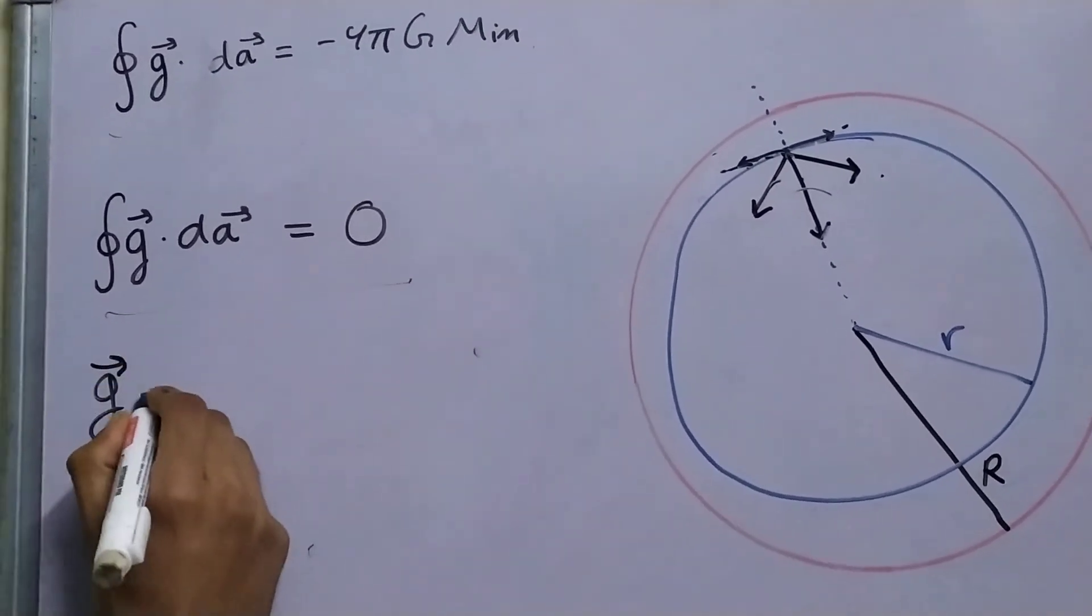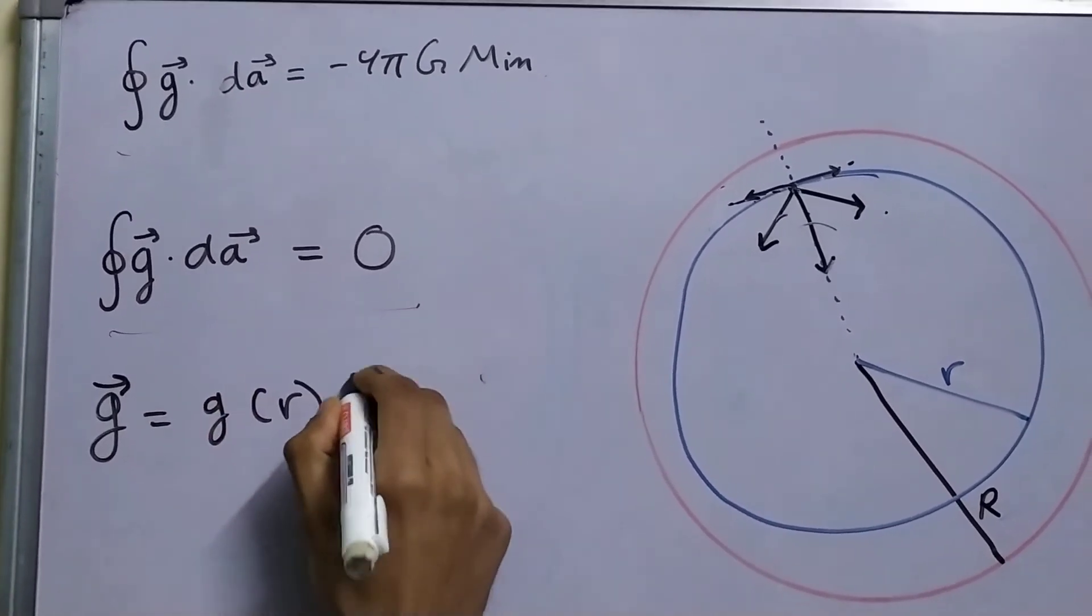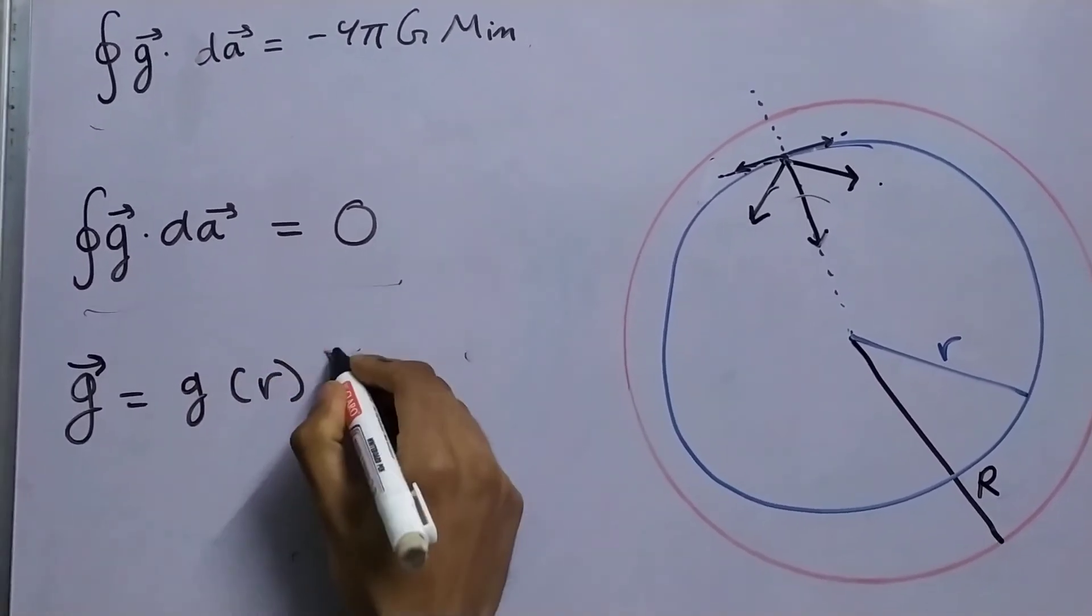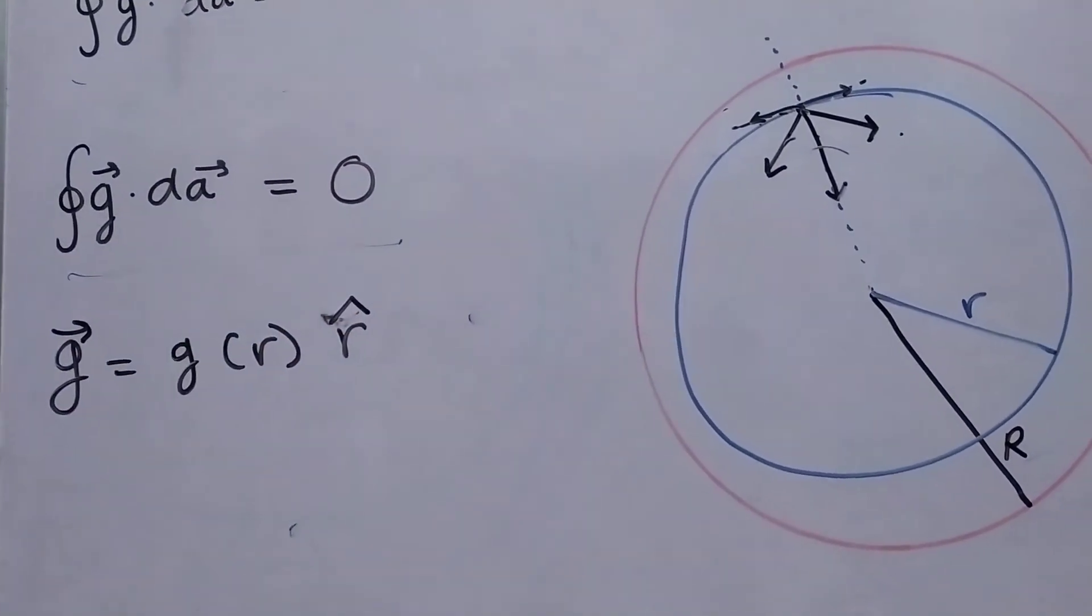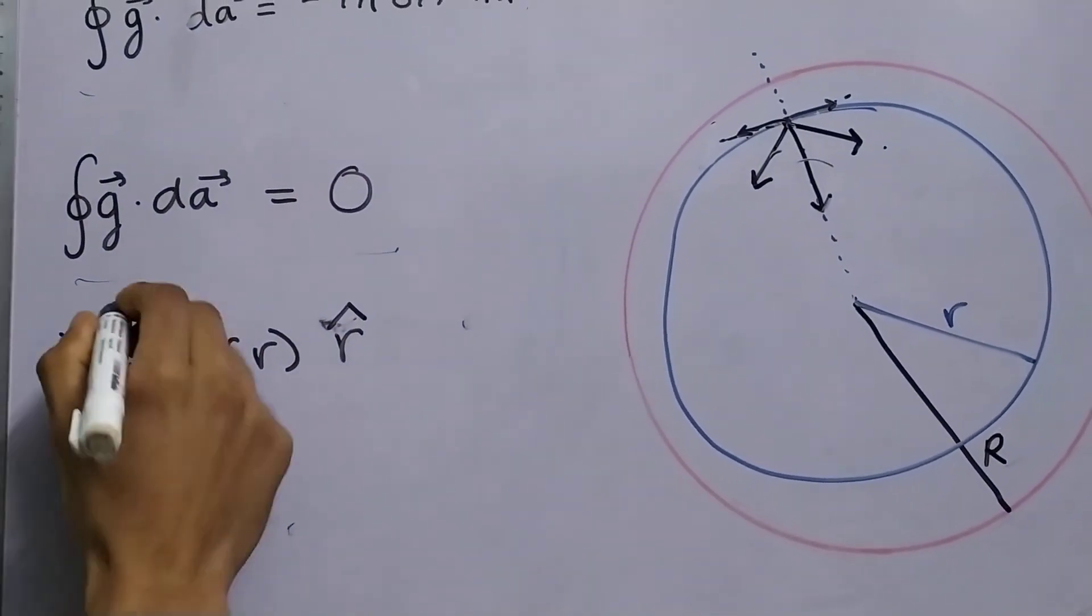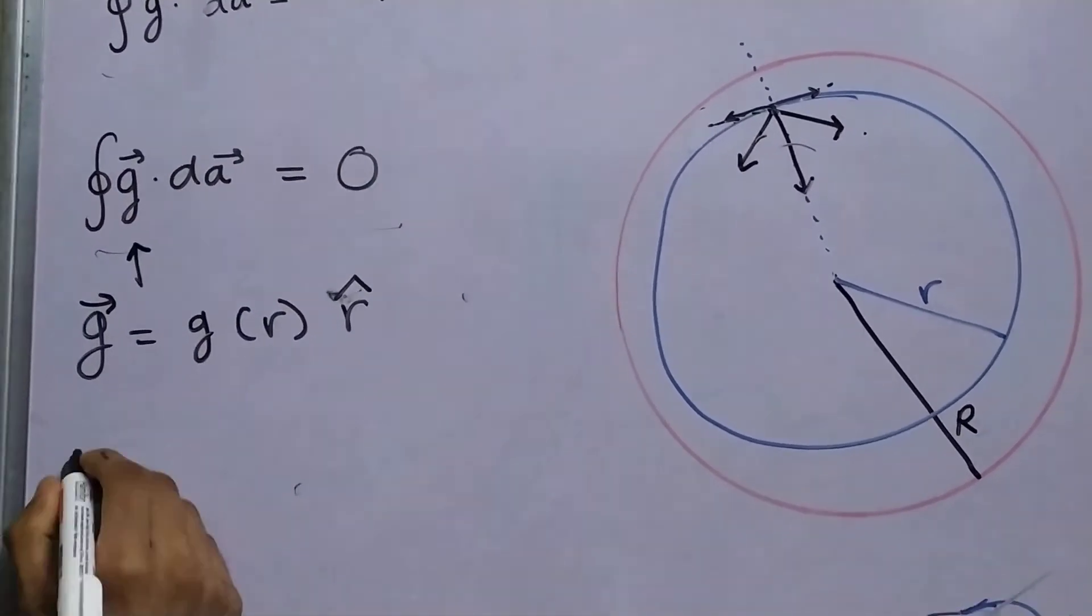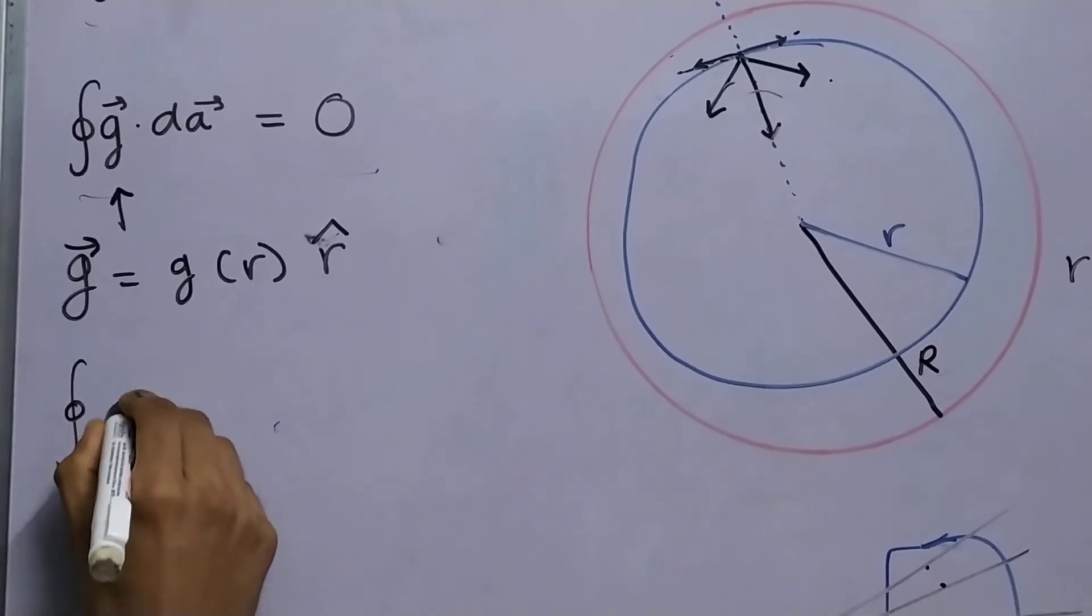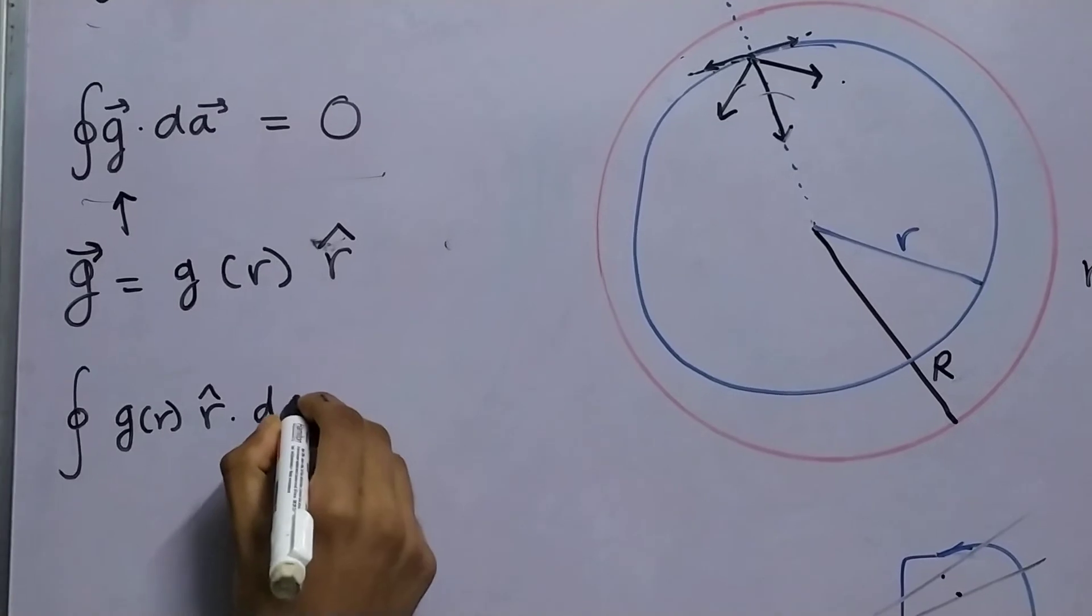Since the field is radial, we can say g is equal to g of r times r cap. I made a similar use of symmetry in my previous video. So, we'll just use this in this equation and we get that surface integral g of r times r cap dot dA.